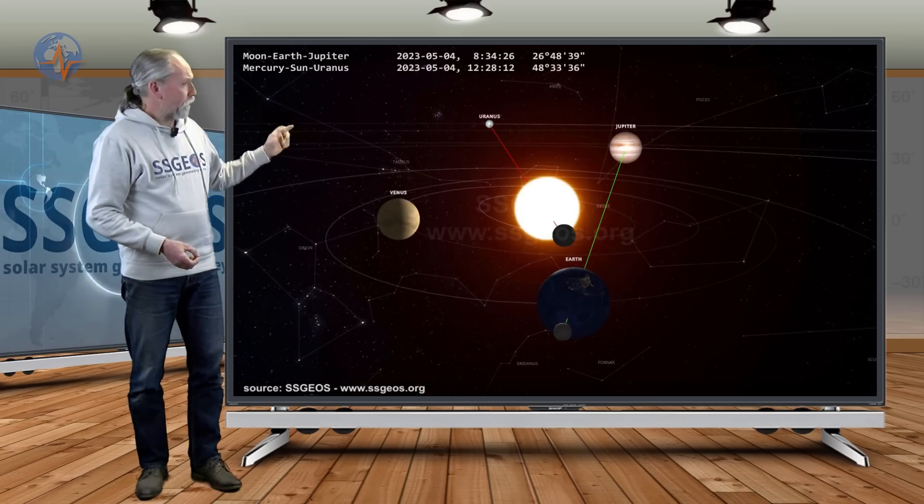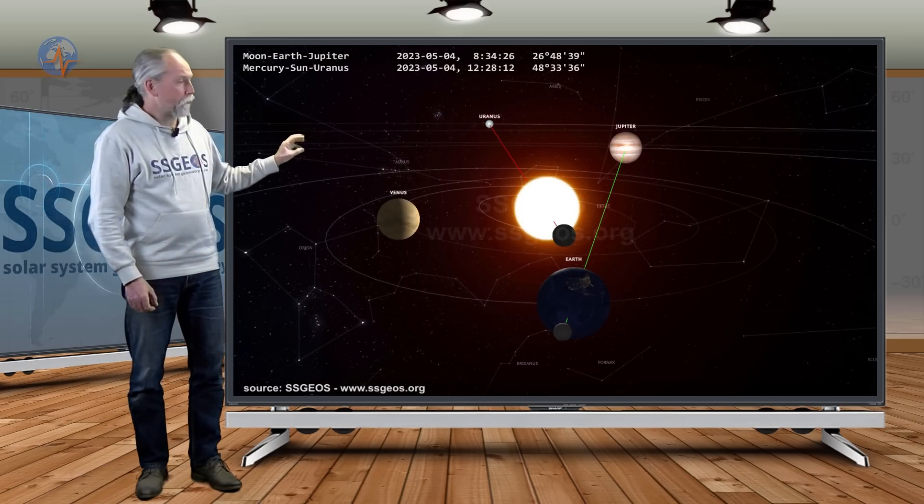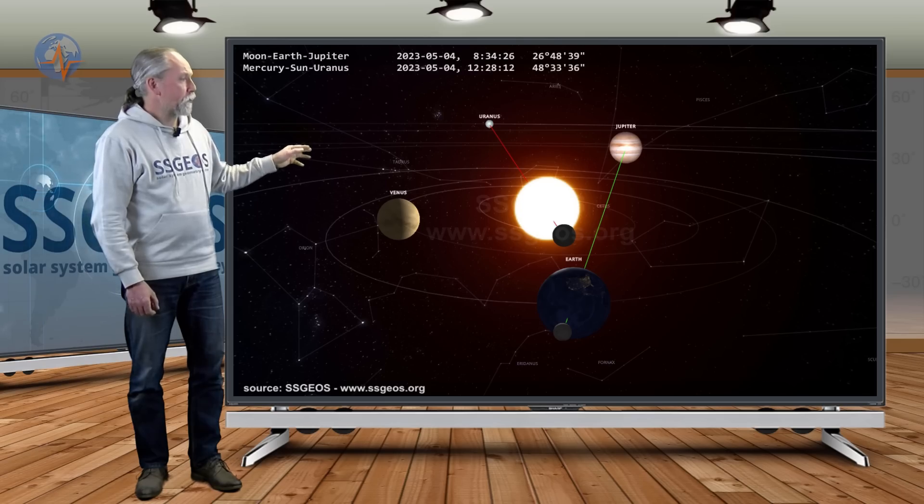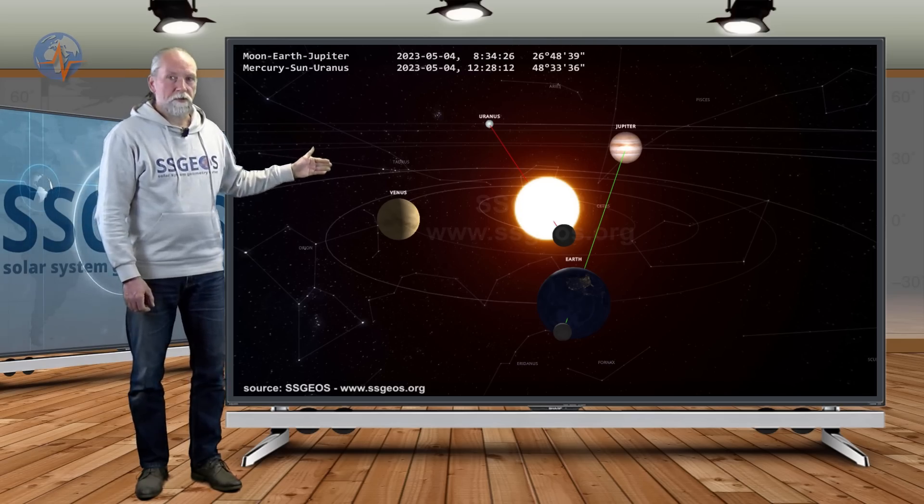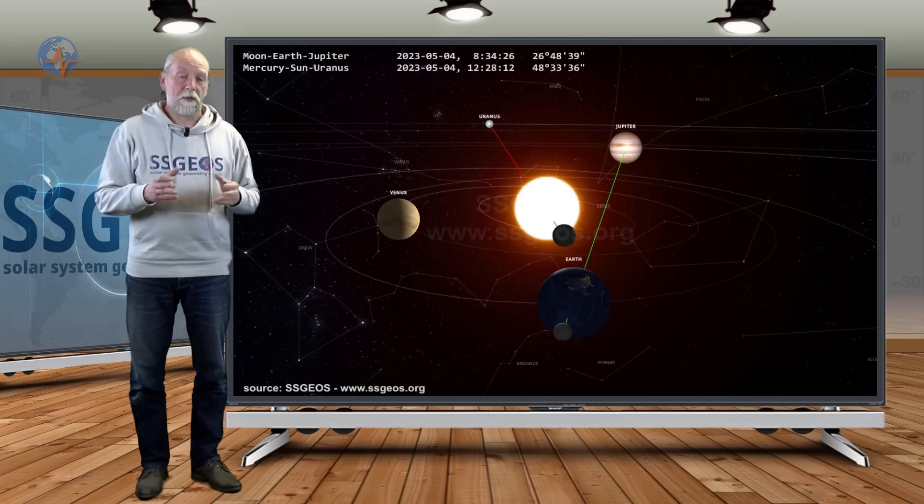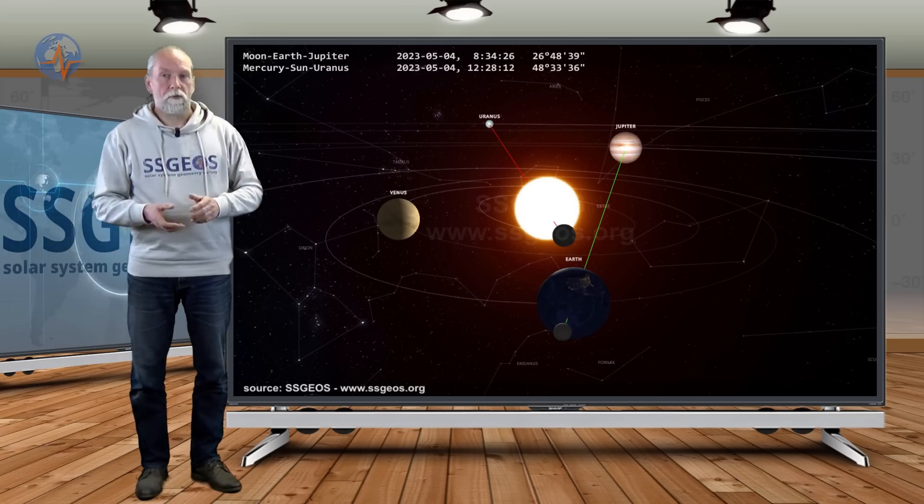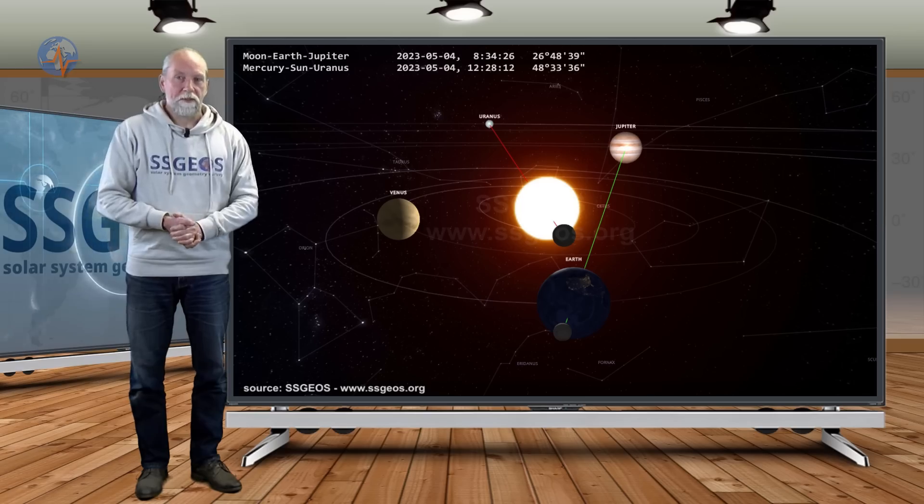And then on the fourth, like I said, we have a similar convergence that will be Moon, Earth, and Jupiter, followed a few hours later by Mercury, Sun, Uranus. So these conjunctions, the planetary-lunar conjunctions yesterday night and on the fourth, occur pretty much at the same time.